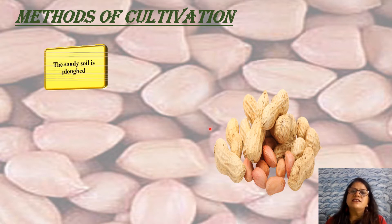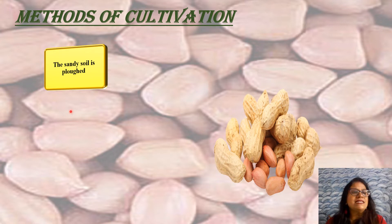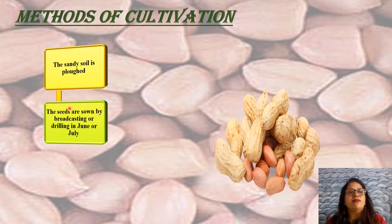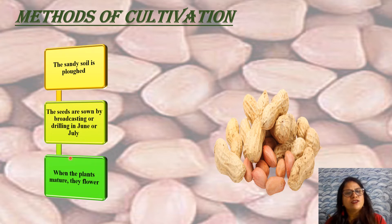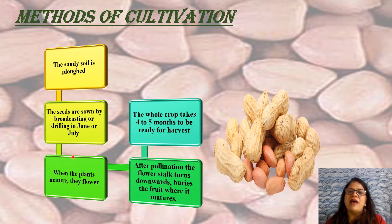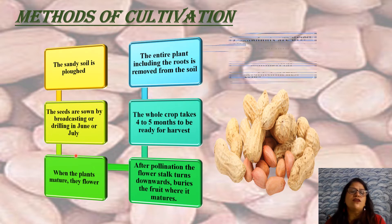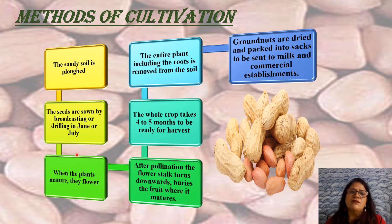Seeds are sown by broadcasting and drilling method. It is a flowering plant and the crop takes four to five months for harvesting. During harvesting, the entire plant is removed from the soil. Groundnuts are packed in sacks after drying and sent to mills or commercial establishments.